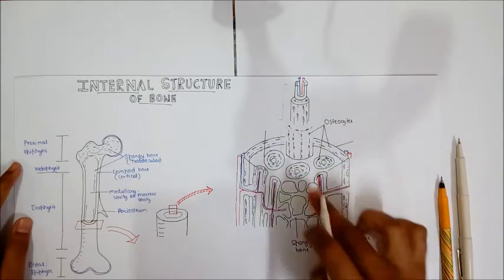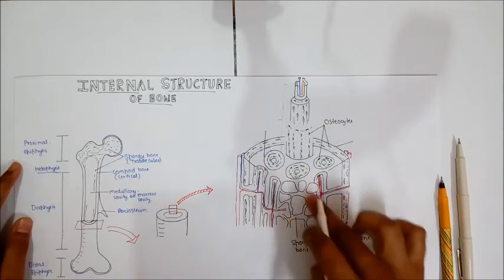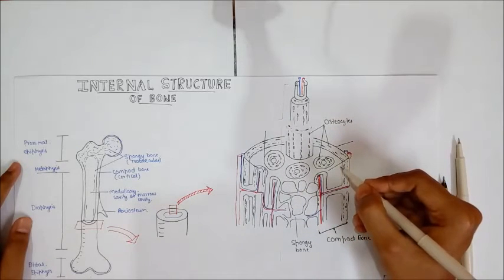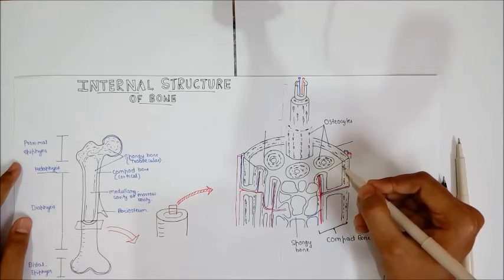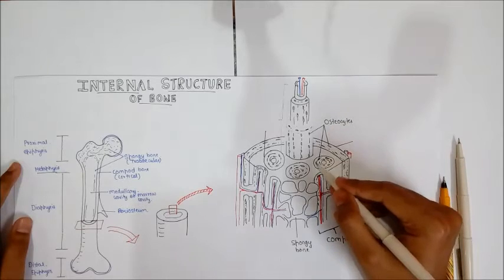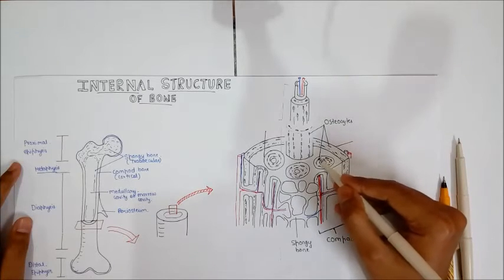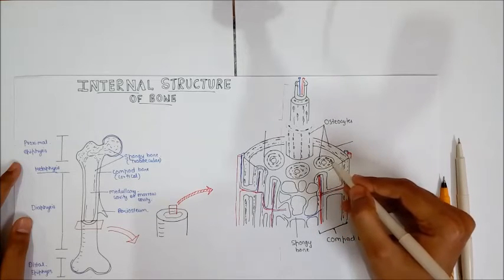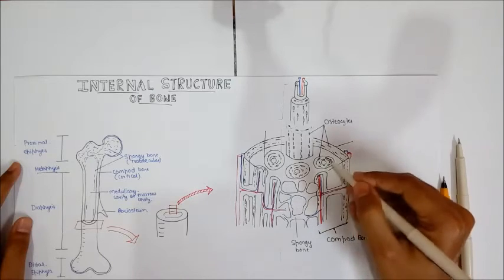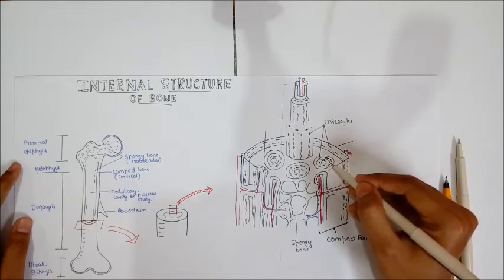The compact bone, when viewed microscopically, contains cylindrical units which are the functional units lying along the long axis of the bone. These are called the Haversian system or osteons.